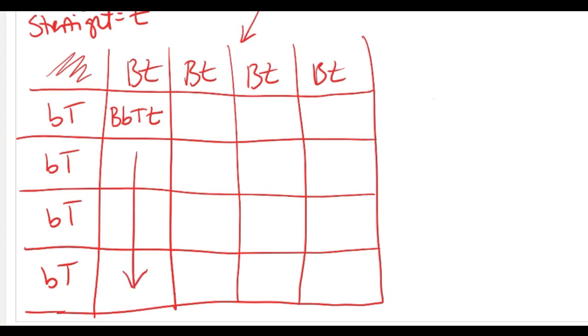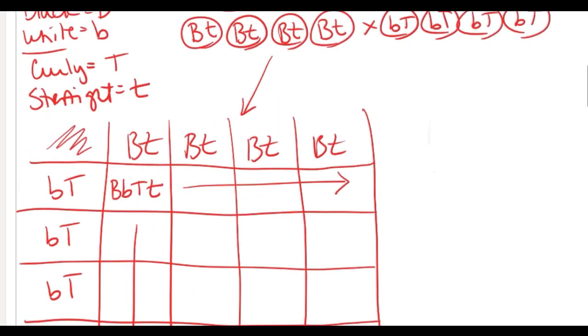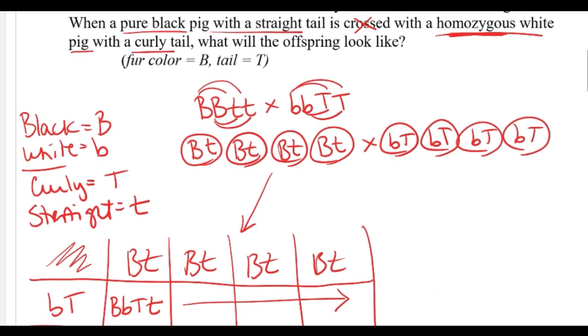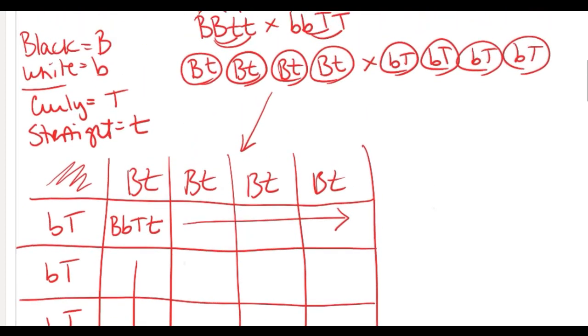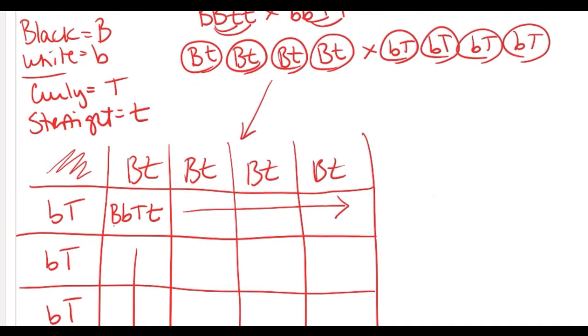So I'm gonna do my B, so big B little b big T little t. These are all the same, so I can draw an arrow and then the same going across. That means all 16 have that same genotype. To answer my question, it wanted to know what will they look like. Look like is phenotype.